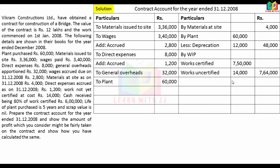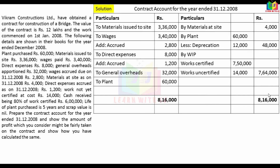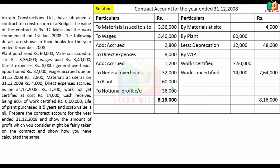On the credit side, we have the balance and notional profit. Credit total is Rs. 8,16,000. On the debit side, adding up gives Rs. 7,80,000. The notional profit is therefore Rs. 36,000.